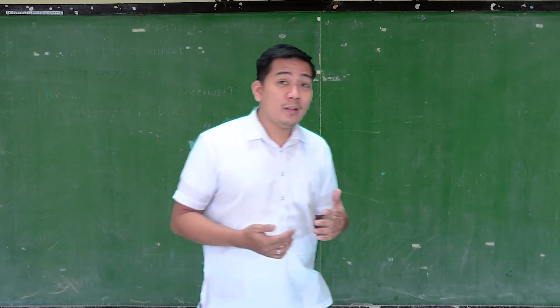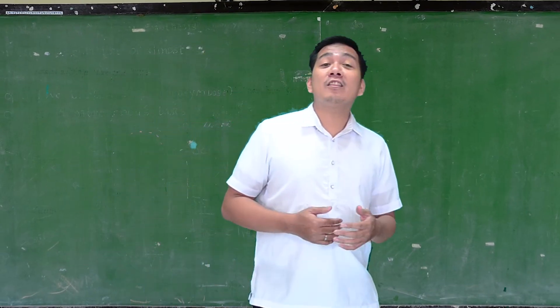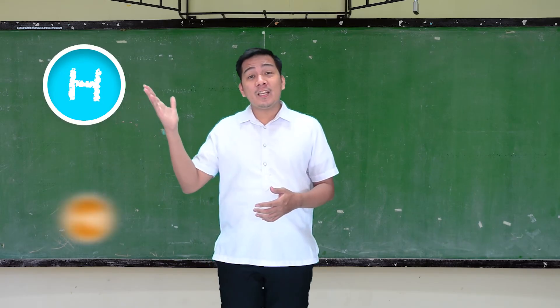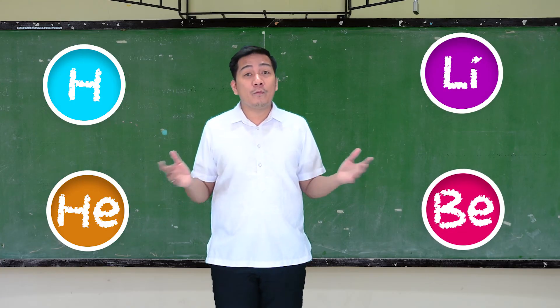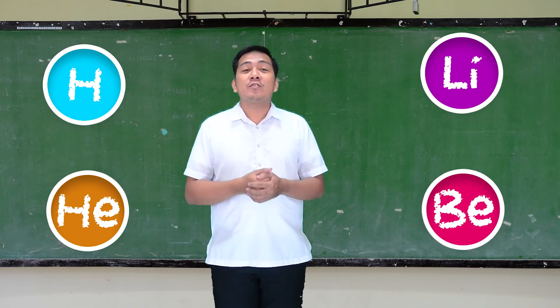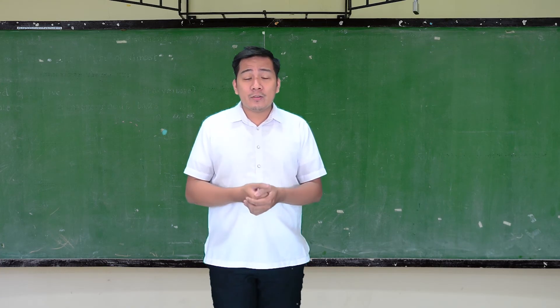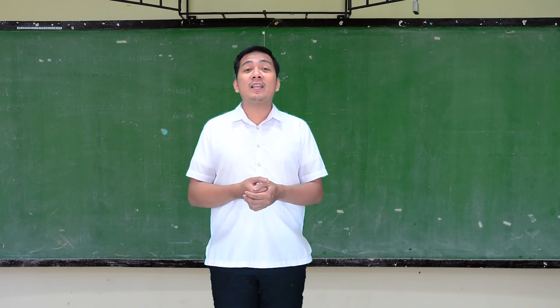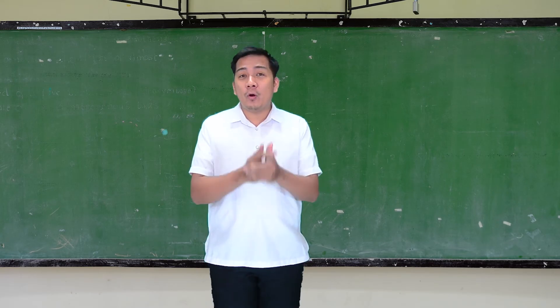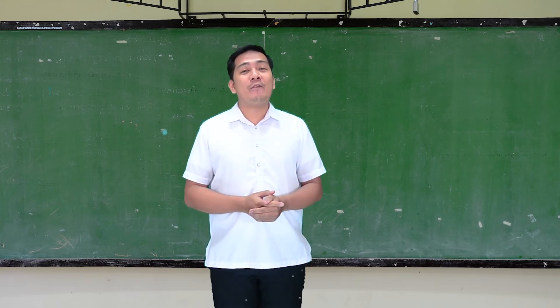So today, we learned how the light elements hydrogen, helium, lithium, and beryllium were formed. Sa susunod na episode o sa susunod na lesson, matutunan naman natin kung paano nabuo ang mga heavier elements. So see ya!